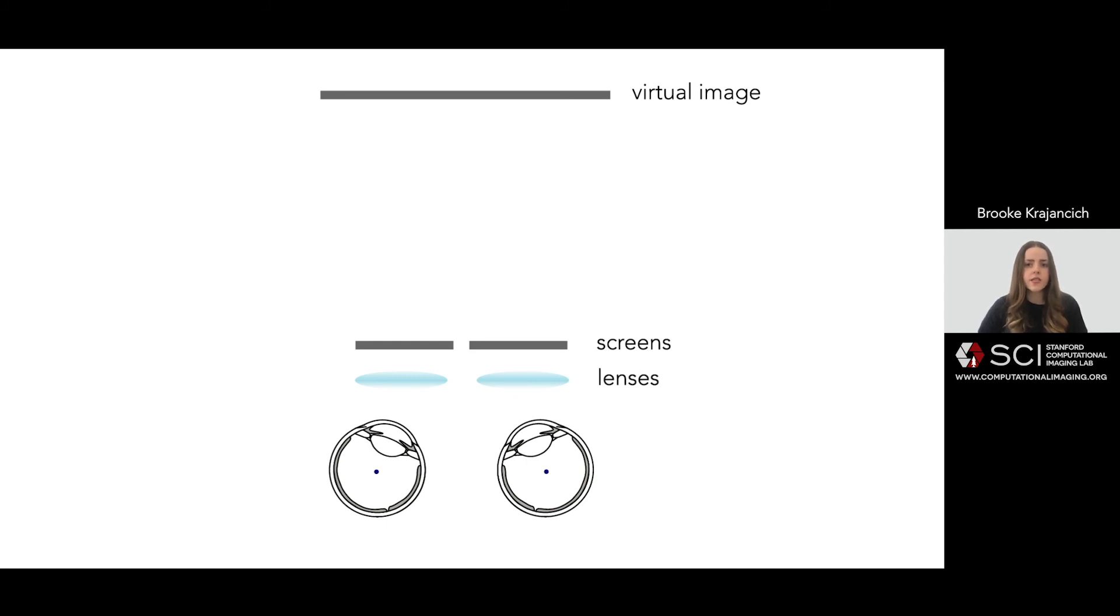Now say I wanted to make this pixel appear at some distance closer than that. Conventional disparity rendering uses the geometry of the system, including the user's interpupillary distance, or IPD,